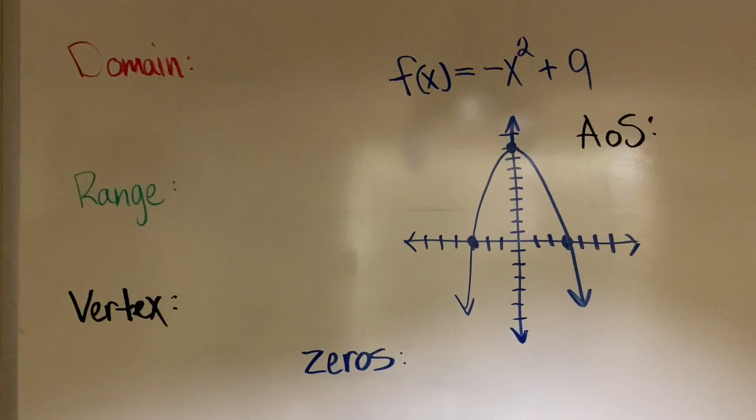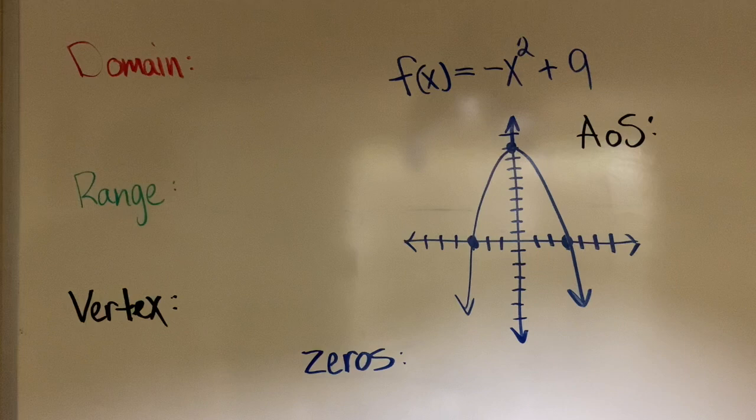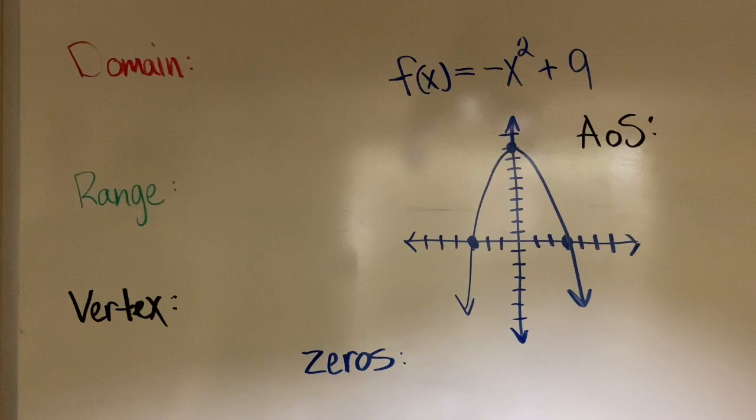So for this example, I'm going to use f(x) = -x² + 9, and I already did a sketch of it. You can always use Desmos, the graphing calculator, to graph it. It makes it so much easier to be able to analyze everything and be able to find whatever it is that we're looking for.